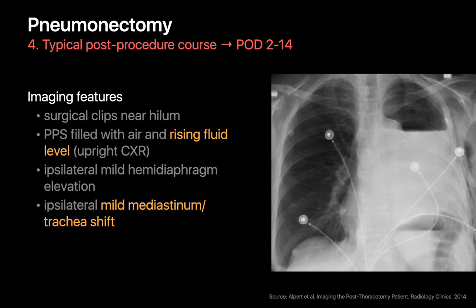On chest x-rays over the next two weeks, you'll still see air in the post-pneumonectomy space, but the relative amount of fluid will progressively increase. If the patient can get an upright rather than supine chest x-ray, you'll see a sharp air-fluid level in the post-pneumonectomy space. You'll also begin seeing mild mediastinal and tracheal shift towards the side of the pneumonectomy.